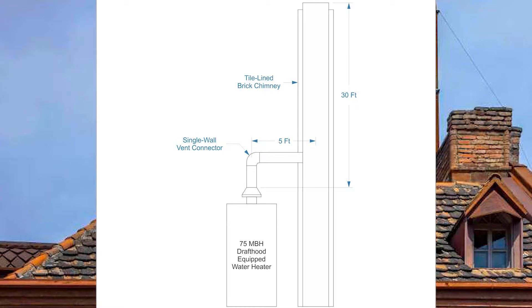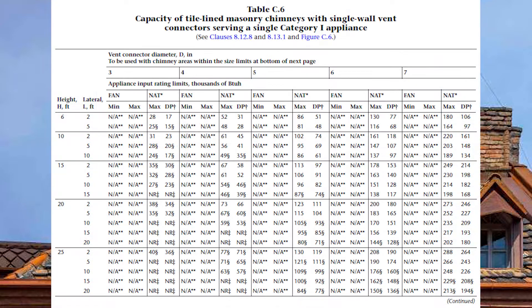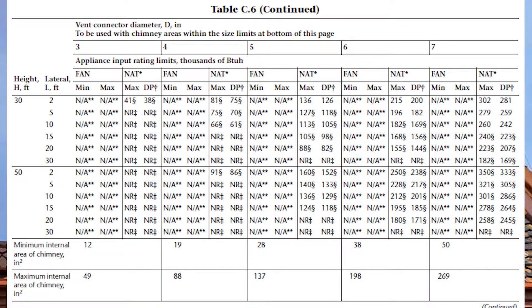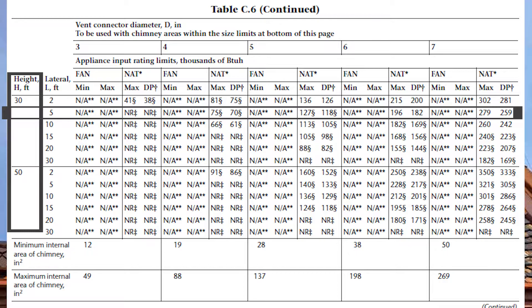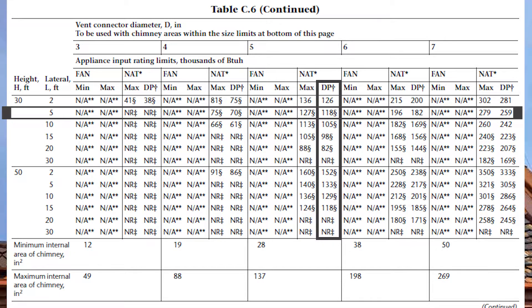Let's jump right into the example. I've got a 75 mbh draft hood equipped water heater with a single wall vent connector, a five foot lateral, going into a 30 foot chimney. Because I have a single gas appliance with a single wall vent connector going into a chimney, I need to use table C6, starting on the second page for the 30 foot vent height. Coming down to 30 feet, across on the five foot lateral, going to NAT DP — 5 inch is good up to 118 mbh, but it has a very weird symbol beside it.